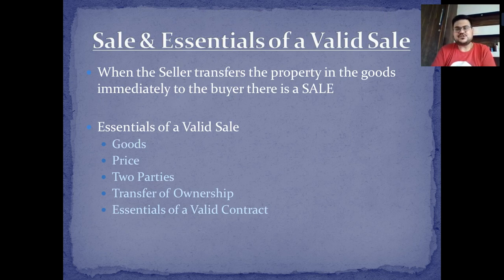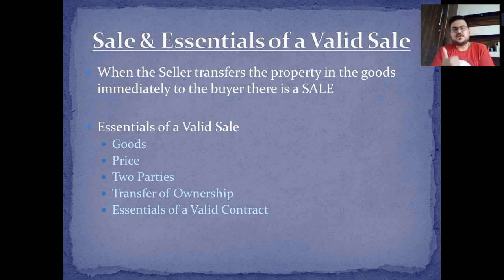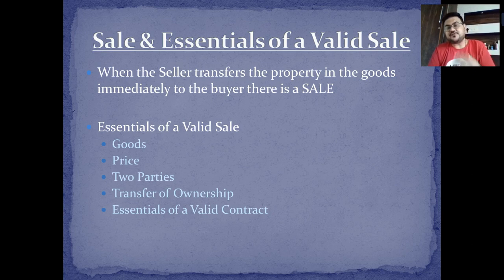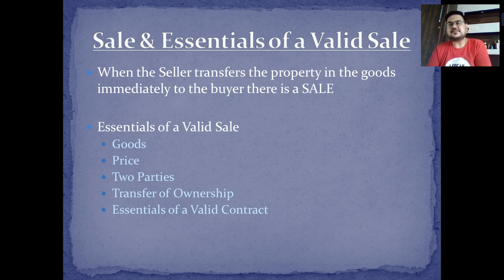A sale occurs when the seller transfers the property and goods immediately to the buyer. The essentials of a valid sale are: goods, a price, two parties, transfer, and the essentials of a valid contract as learned in Chapter 1. If I have sold goods to you and you can prove you are the owner, that constitutes a sale.